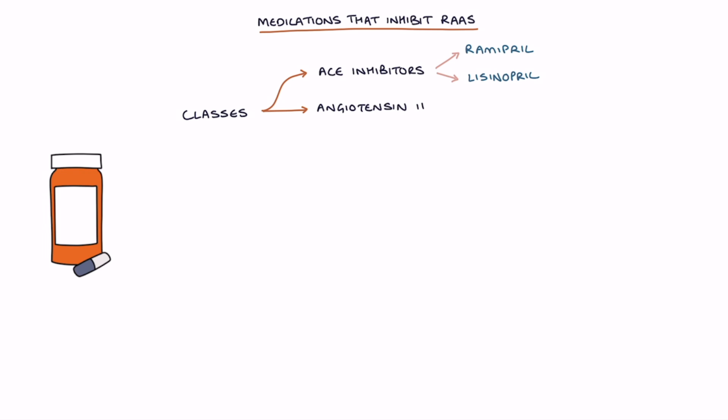Next let's talk about medications that inhibit the renin-angiotensin-aldosterone system. Three common classes of medications are used to inhibit the RAAS. ACE inhibitors, for example ramipril and lisinopril. Angiotensin-2 receptor blockers, for example candesartan and losartan. And aldosterone antagonists, for example spironolactone and eplerenone.